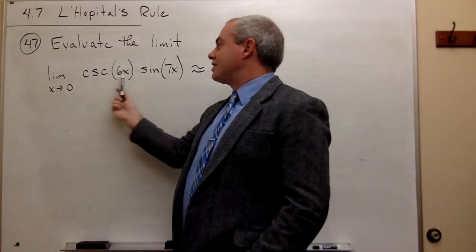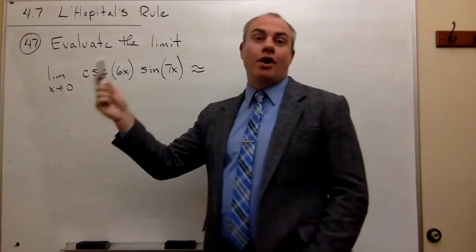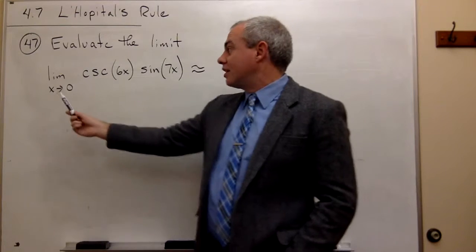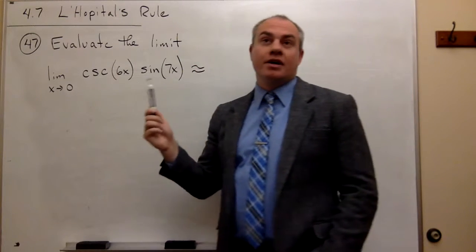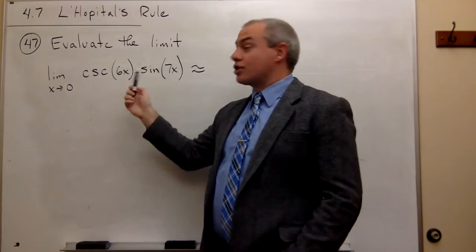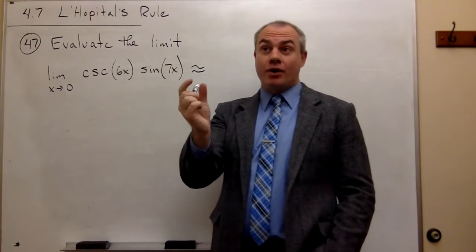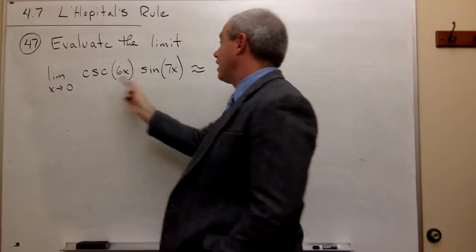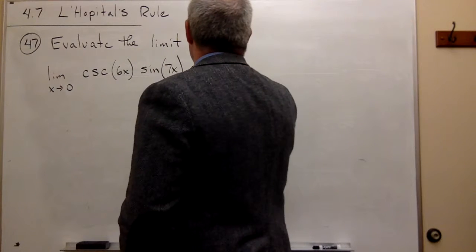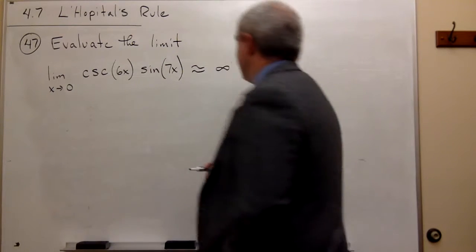Cosecant of 6x is the same thing as 1 over sine of 6x. As x goes to 0, sine of 6x goes to 0, so 1 over something going to 0 goes to infinity. So this first guy is like infinity.